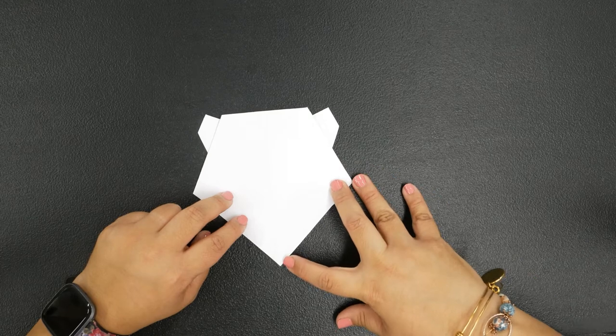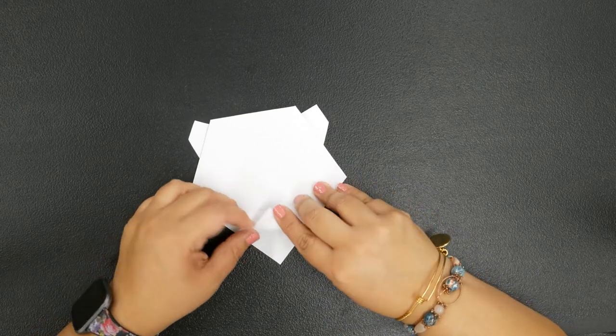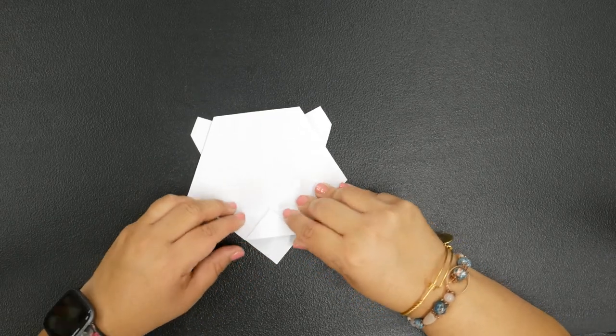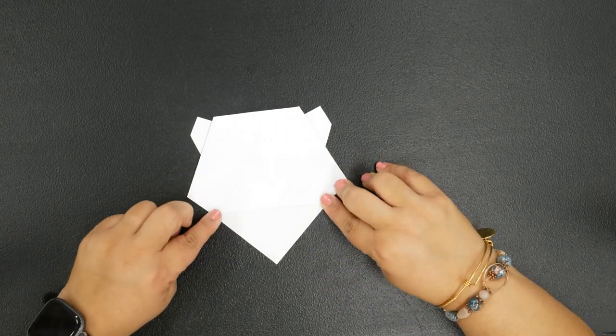That bottom tip of that triangle, bring it up into that crease that we just created and crease there on the bottom, and then just flip it all the way over so it looks like this.